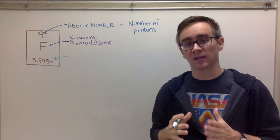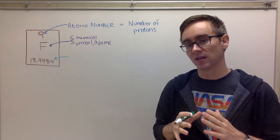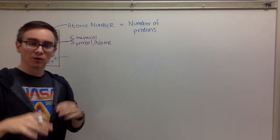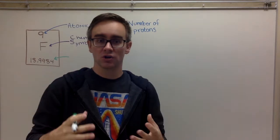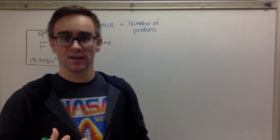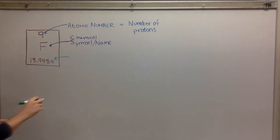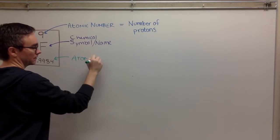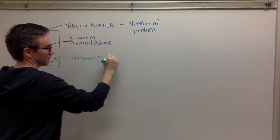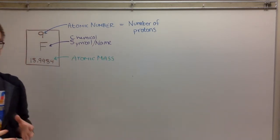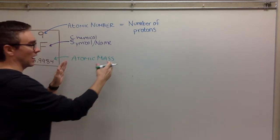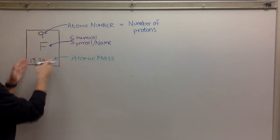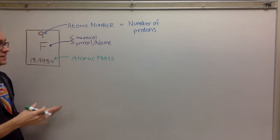Now this bottom number — this is where it can get a little tricky. This bottom number is most of the time a decimal. Long story short, it is the average of all the different versions of that atom, but we'll get back to that. This is what we call the atomic mass. For right now I'm not as concerned about the atomic mass until we talk about isotopes, but we can use this number. The atomic mass of fluorine is 18.9984.